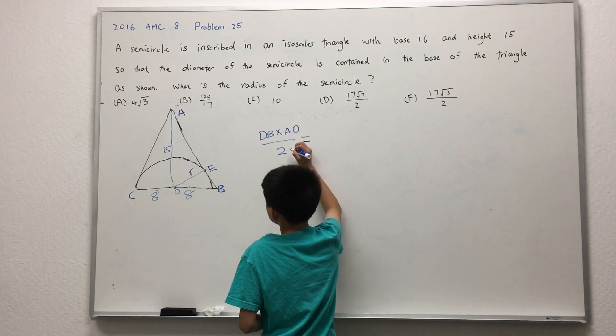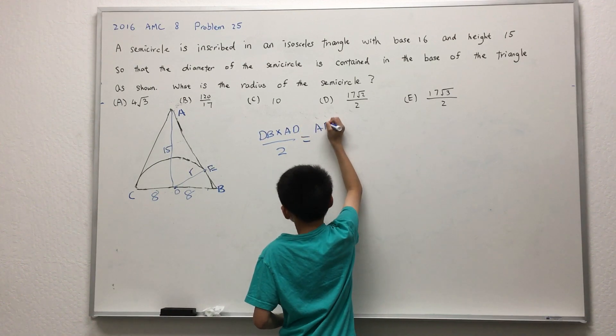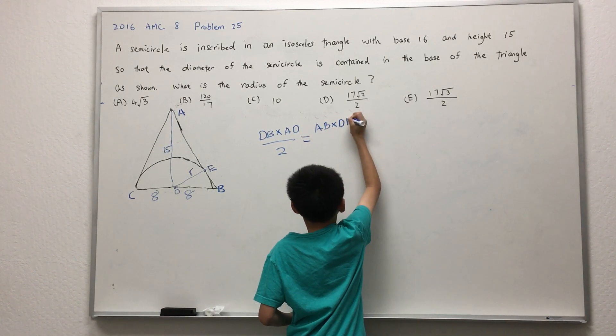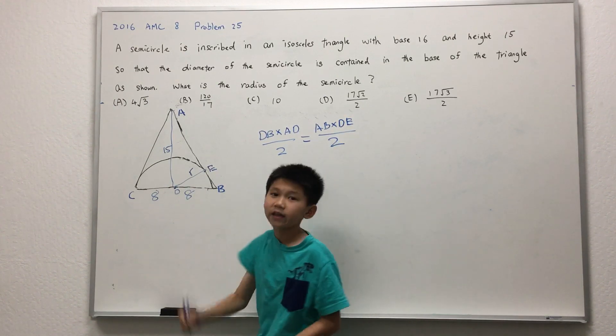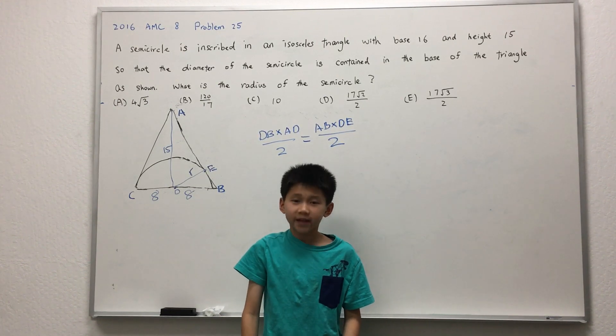DB times AD over 2 is equal to AB times DE over 2. We can find line segment AB by the Pythagorean theorem.